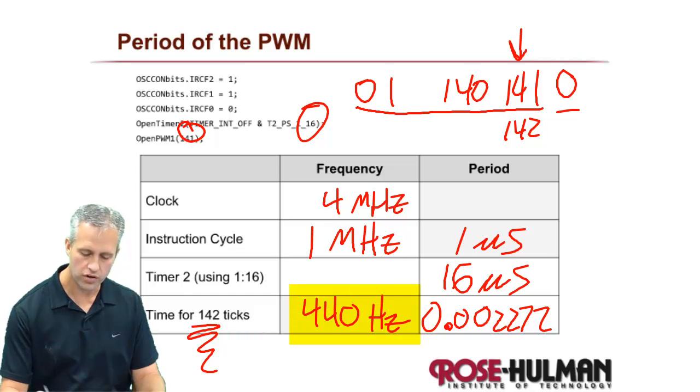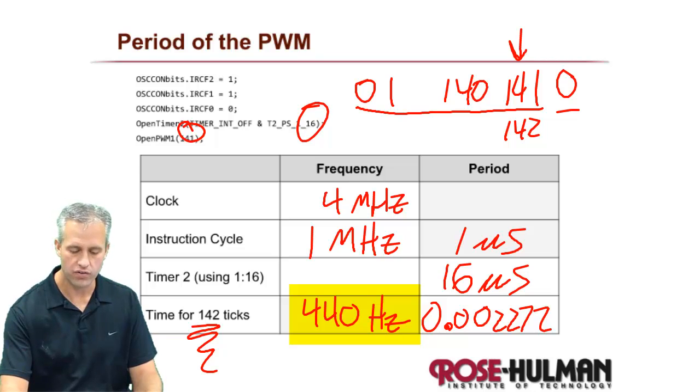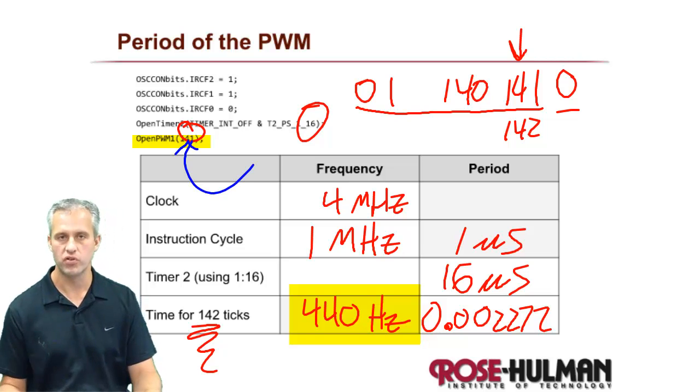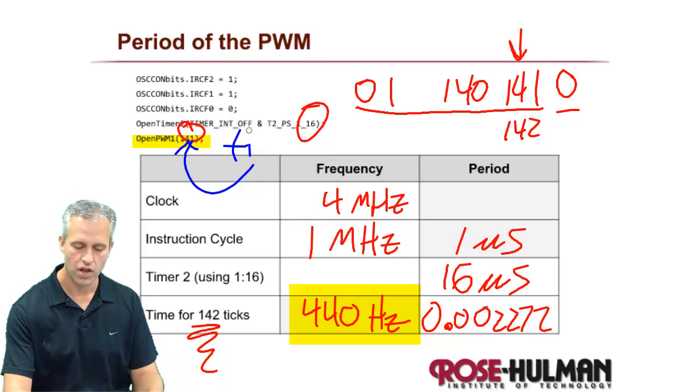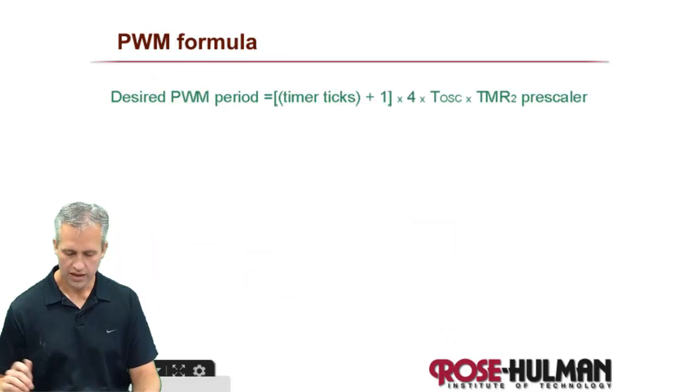So 440 Hz is the note that was playing. It's actually a very popular note. It's A, which is just above middle C. So 440 Hz is what's playing. And the way you figure it out is because open PWM1, what it does is it tells you the number of timer ticks between rising edges. That's all it does. So this is this variable I sometimes call timer ticks. So whenever I pass it in, I say this is the number of timer ticks.